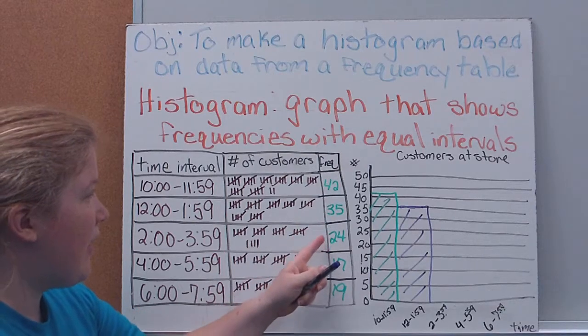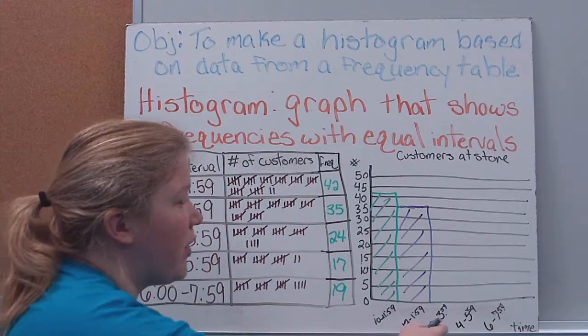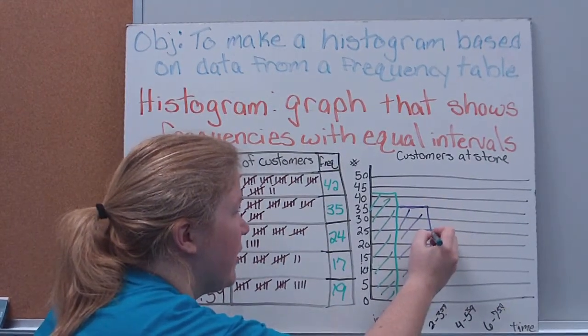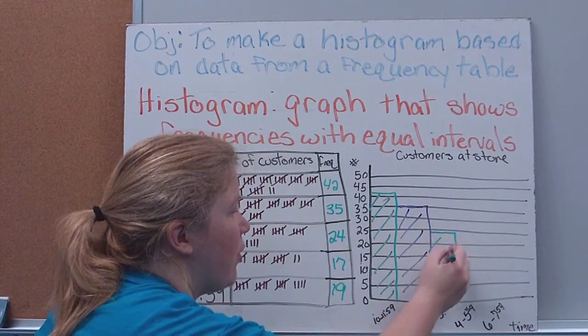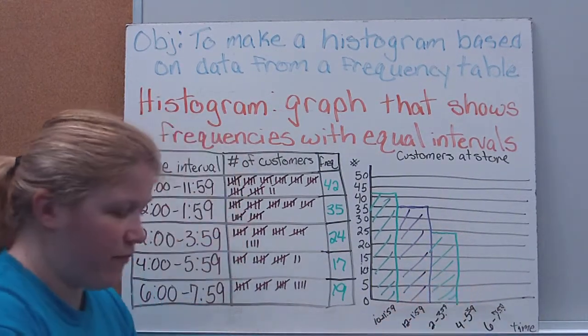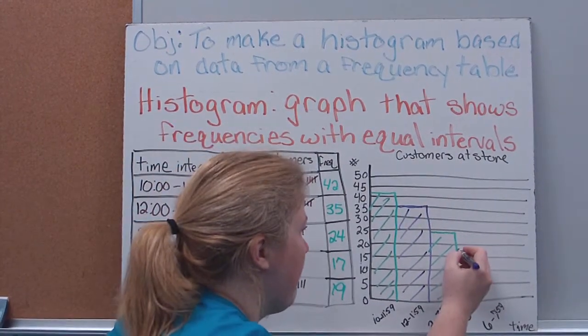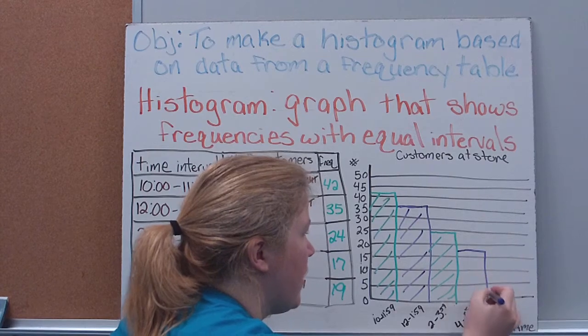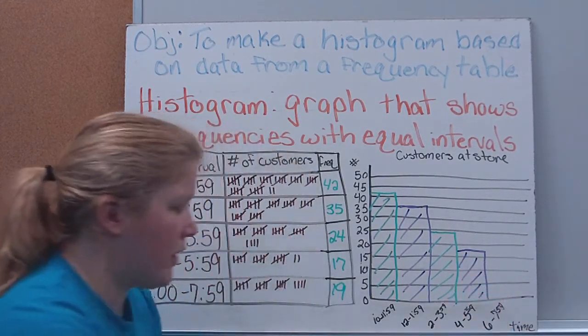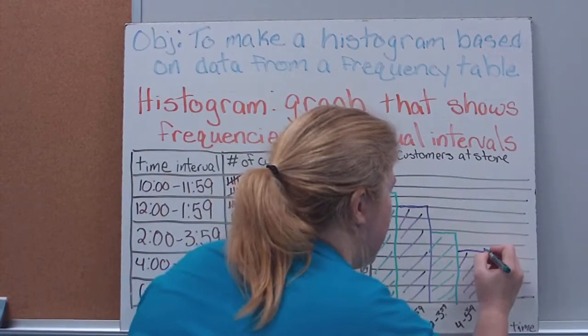They should touch each other as you go. Our next one, after 35, there were 24 in our next time set. So we're going to come here to 24. Again, draw our bars that are nice and big and thick. Our next one was 17. And our final one was 19.